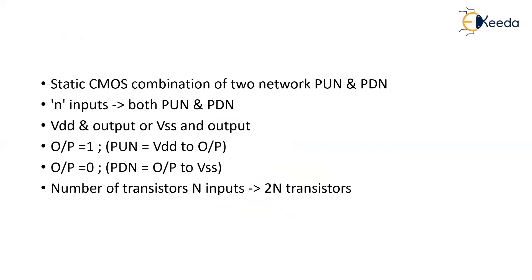Static CMOS is a combination of two networks: pull-up network and pull-down network, with a common N number of inputs given to both. If my output and VDD make a connection, the output will be 1. If my output and VSS make a connection, the output will be 0. The output is charged to VDD making it equal to 1, or whatever voltage is at the output will be discharged to ground, making the output 0.